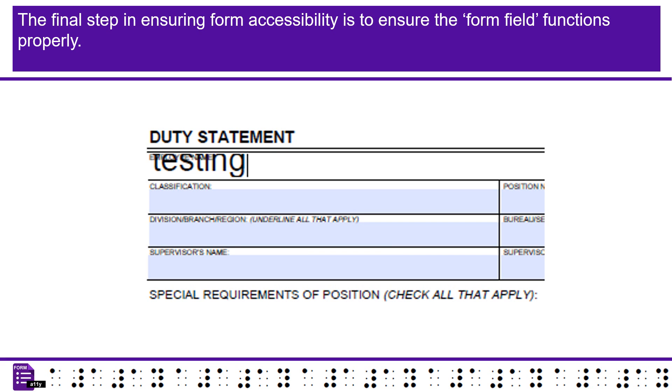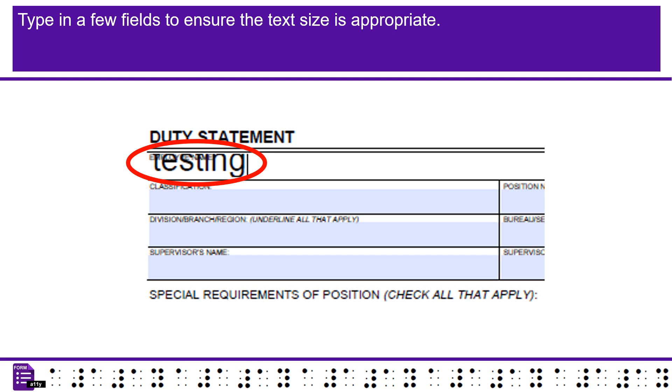The final step in ensuring form accessibility is to ensure the form field functions properly. Type in a few fields to ensure the text size is appropriate.